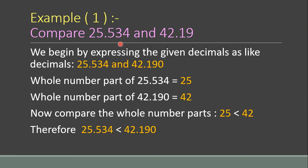Here I am showing you two examples of how to compare decimal numbers. Example one: compare 25.534 and 42.19. You can also read these as twenty-five point five hundred thirty-four thousandths and forty-two point nineteen hundredths. After the decimal, you can read the digits separately.